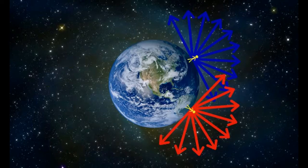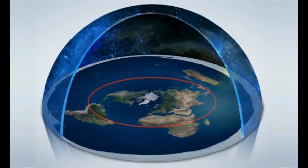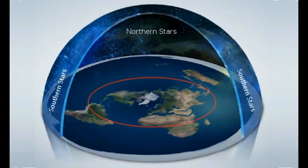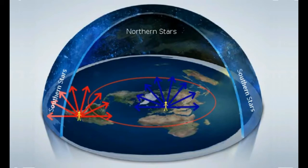In contrast, on the Flat Earth model, the North is the center and the South is a ring around it. The stars would have to be arranged in a dome shape over the Flat Earth. In this model, it makes no sense that people in the North cannot see the Southern stars, and vice versa. And it is particularly absurd that people in the outer ring can all see the same Southern stars, but not the Northern stars at all.